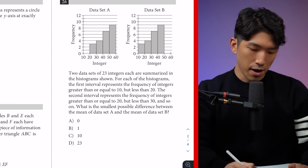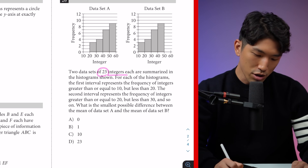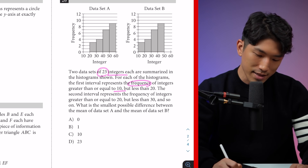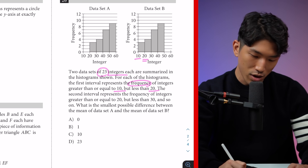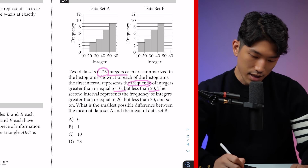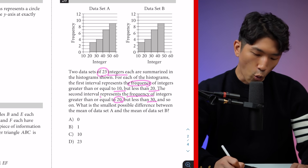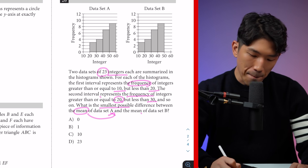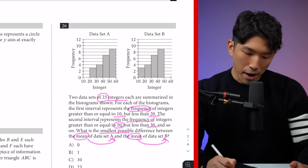This next one is a little bit funky. We're given two graphs. The question says: two data sets of 23 integers are summarized in the histograms shown. For each histogram, the first interval represents the frequency of integers greater than or equal to 10 but less than 20 — so the first bar represents how many numbers fall in that range, in this case 3. The second interval represents integers ≥20 but <30, and so on. The question asks: what is the smallest possible difference between the mean of data set A and the mean of data set B?